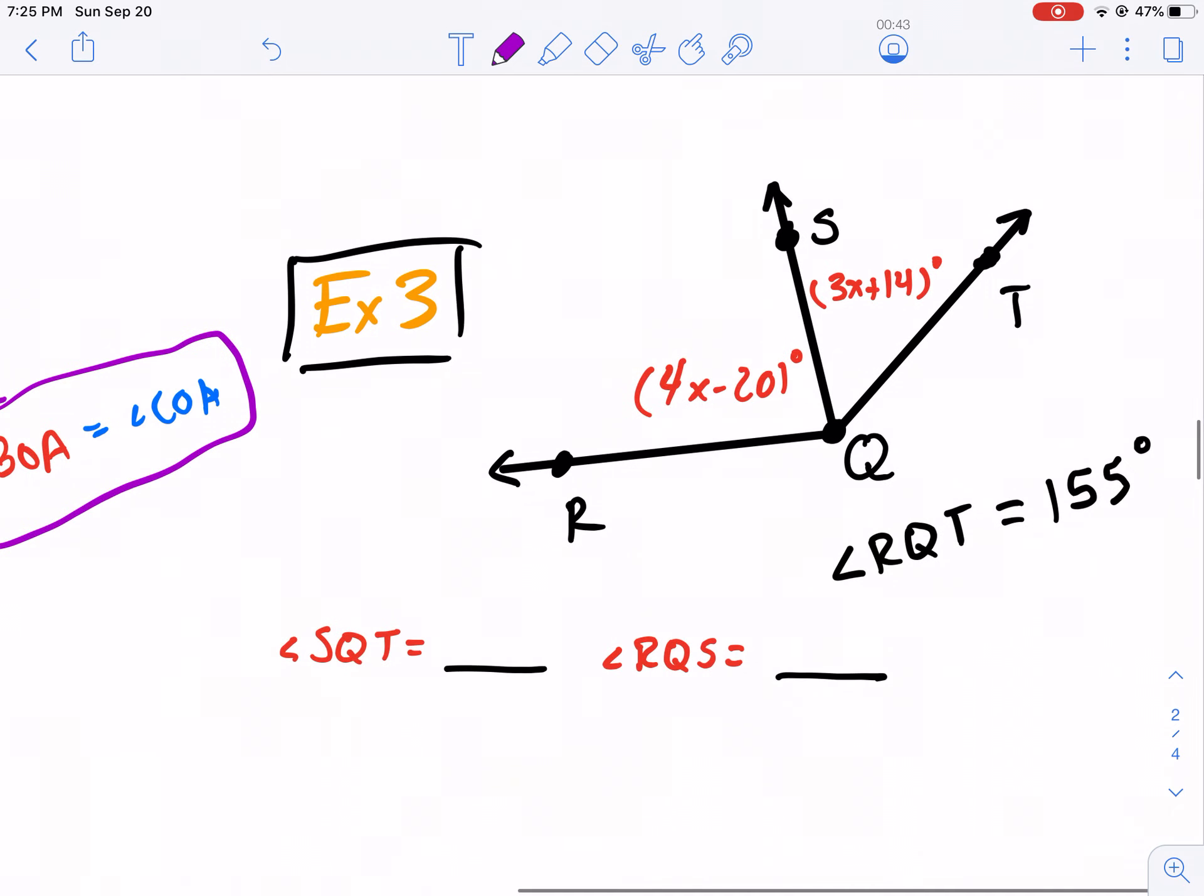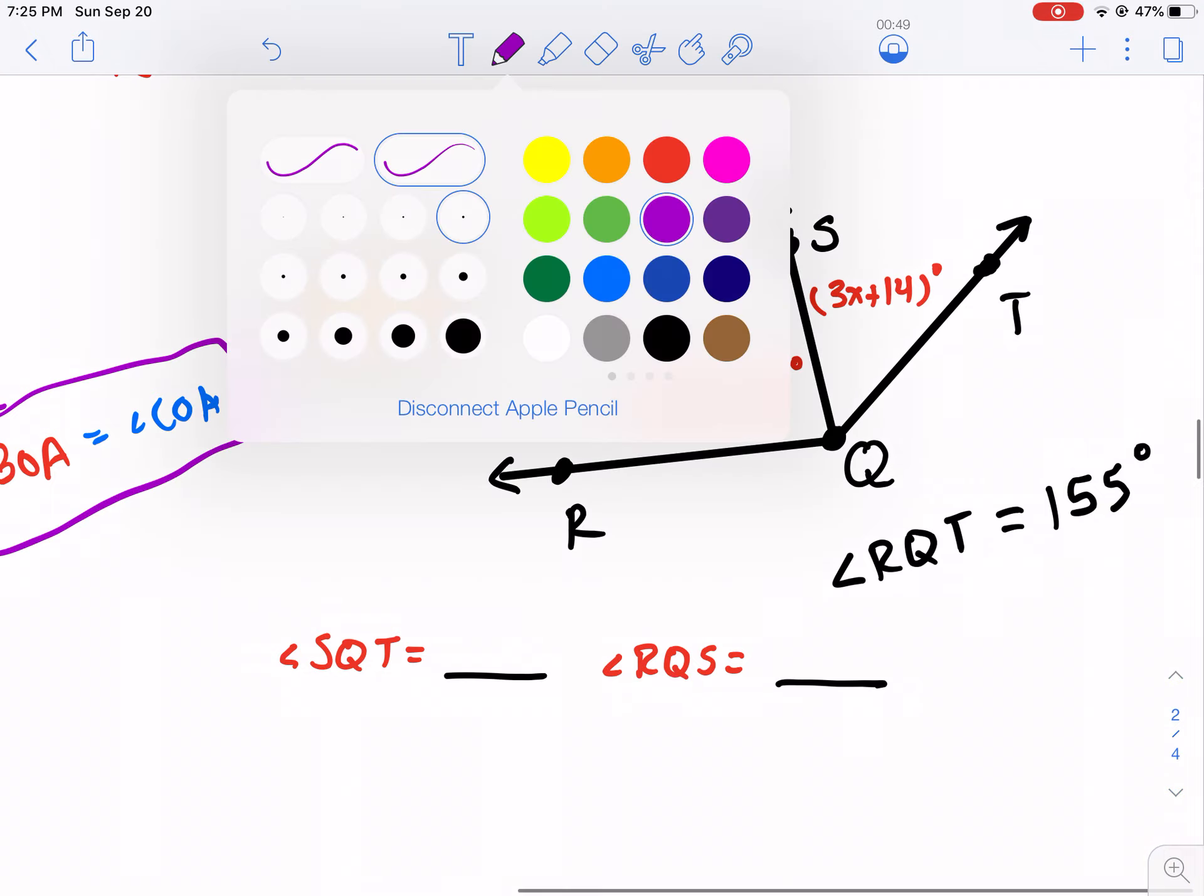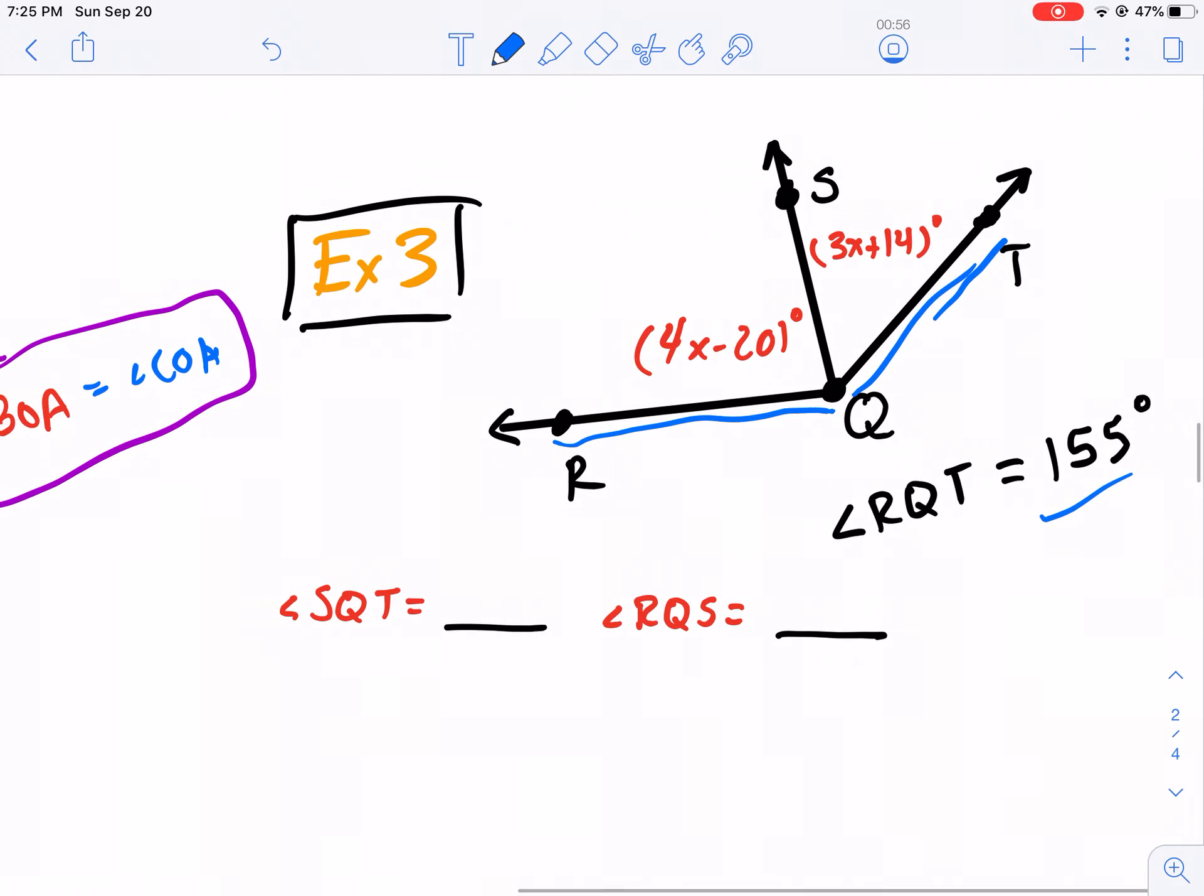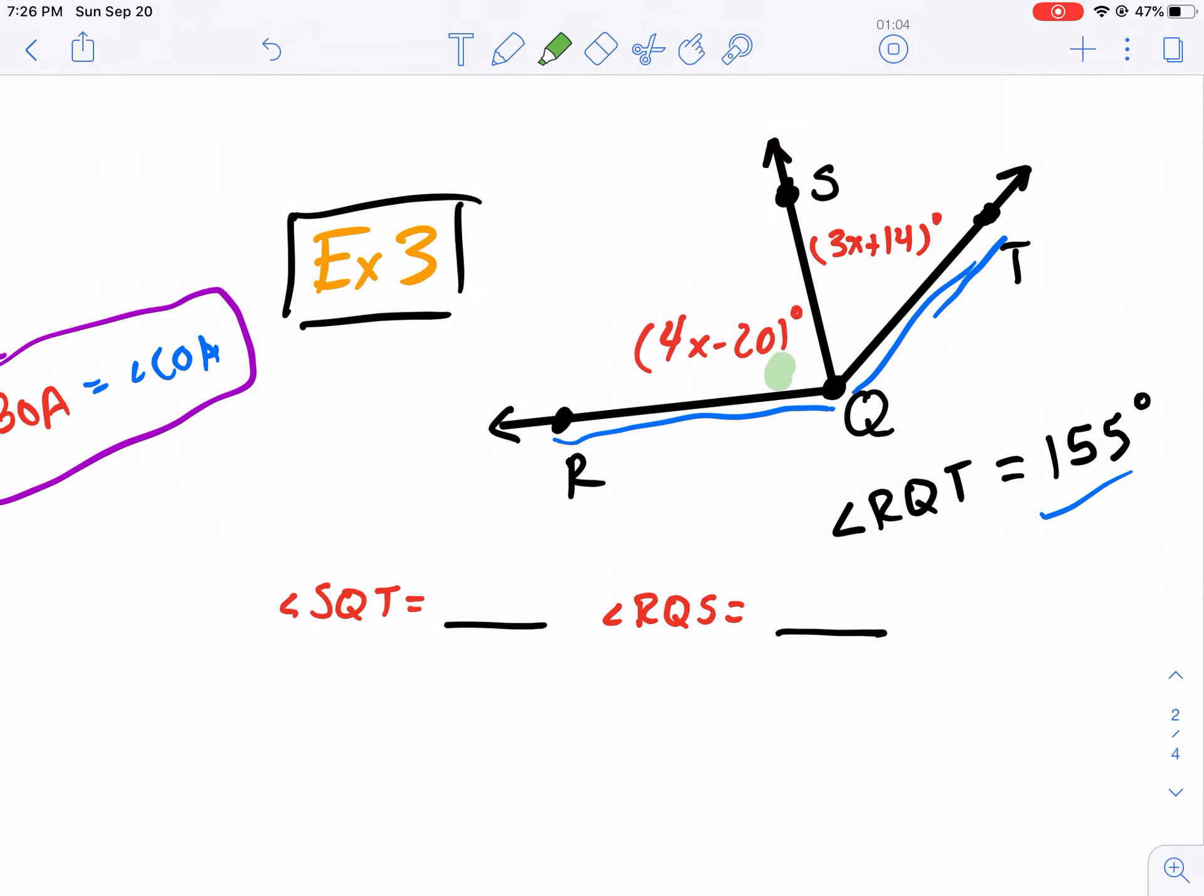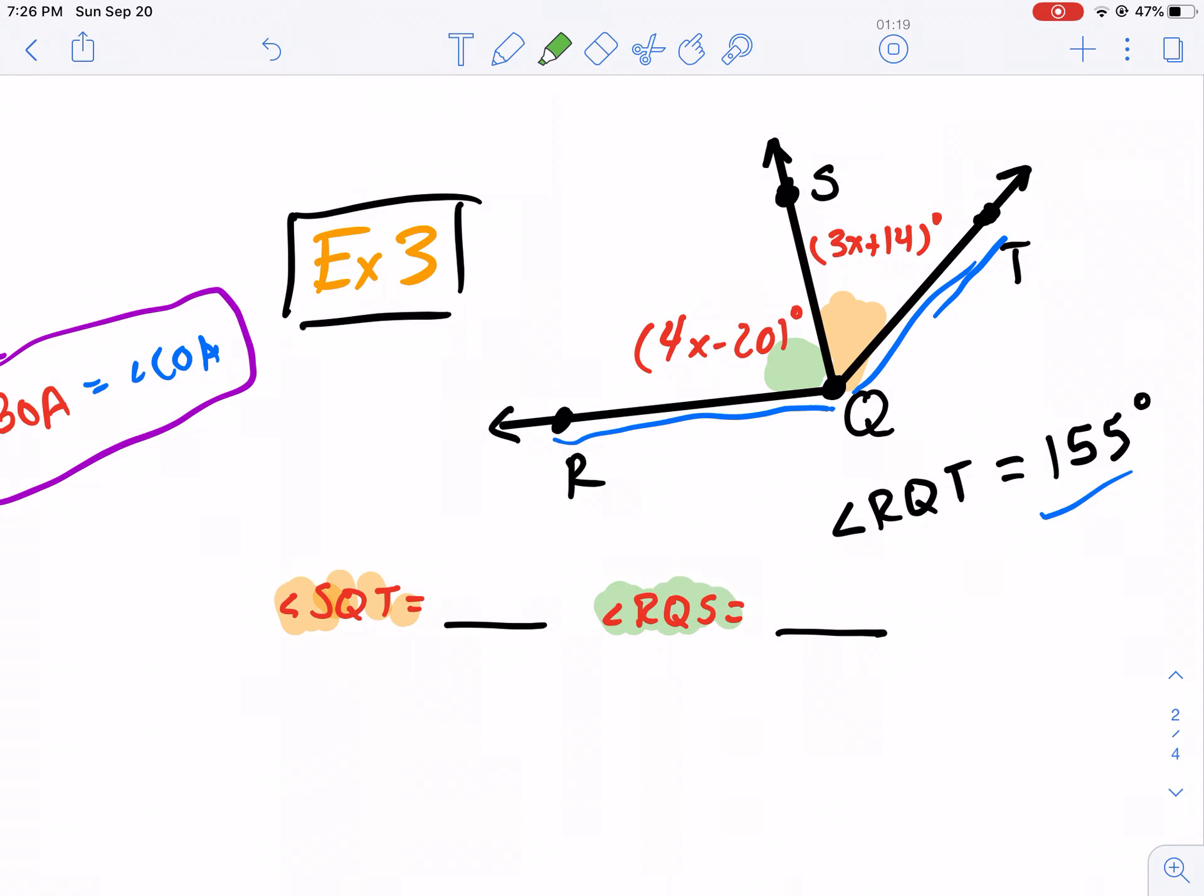Now, this is kind of the toughest problem we have. This is example three. And it's saying that RQT, that's our big angle. Our big angle is measured 155. We need to find the two smaller angles, SQT. That's this guy. And we also need to find RQS. So SQT will make orange. And then green, we'll make RQS.